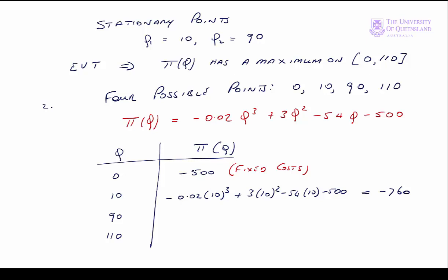And similarly for q equals 90, there we have 4360. And finally for q equals 110, that's equal to 3240.